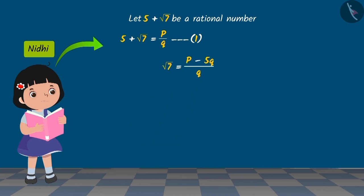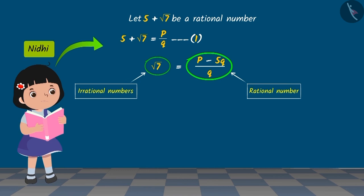Since the difference of rational numbers is also a rational number, we can say that since P and Q are rational numbers, then P minus 5Q upon Q on the right side is also a rational number. But the square root of 7 on the left side is an irrational number.